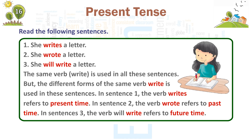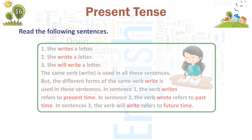The same verb, write, is used in all these sentences. But different forms of the same verb are used. In sentence 1, the verb 'writes' refers to present time. In sentence 2, the verb 'wrote' refers to past time. In sentence 3, the verb 'will write' refers to future time.